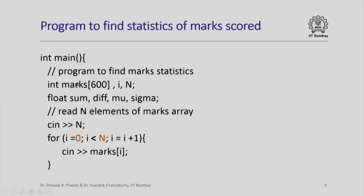Here is a program. We declare the array int marks 600, the variable i and n. We declare sum, diff, mu, and sigma as float. Why do we do that?